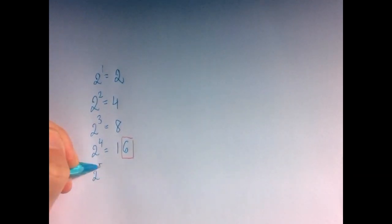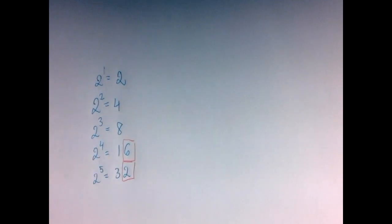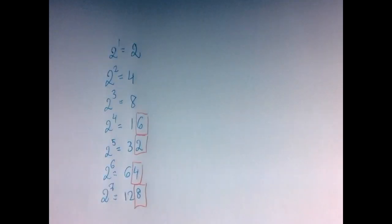Continuing, 2 to the 5th power is 32 with the last digit of 2. 2 to the 6th power is 64 with the last digit of 4. 2 to the 7th power is 128 with the last digit of 8. Now there is not that many digits, right?